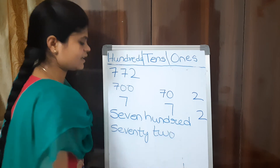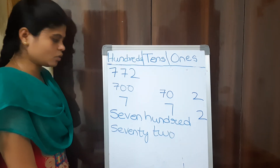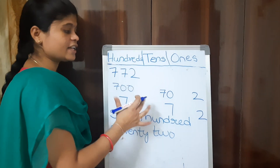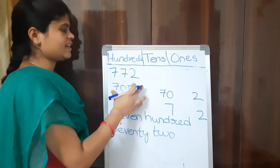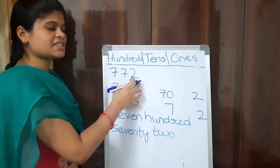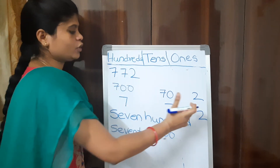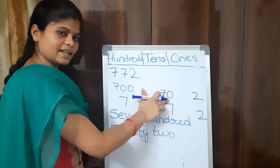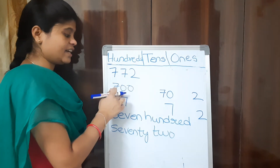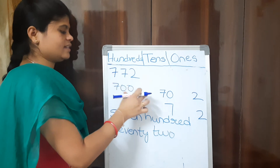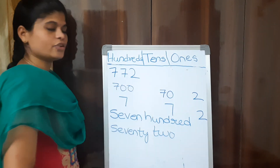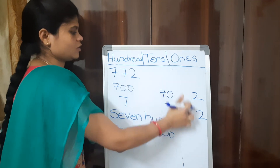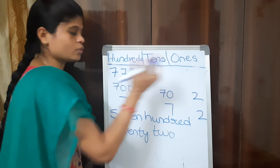The number name of 772 is seven hundred and seventy-two. Think of it this way: if you have 772 chocolates, place 2 in the 1s section, 70 in the 10s section, and 700 in the 100s section — add them all and you get 772. That is why we write it this way in place values.